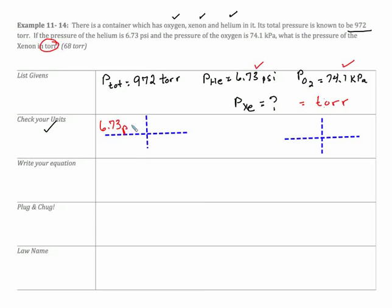So 6.73 psi. If you look on your formula chart, it's not something you have to memorize anymore. You would find that for every 760 torr, there are 14. But that gives me 348 torr is my partial pressure of my helium.